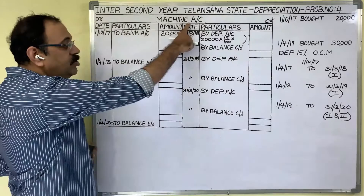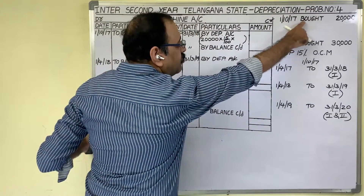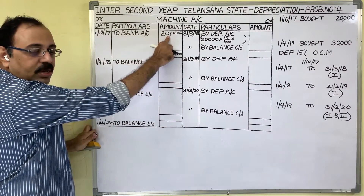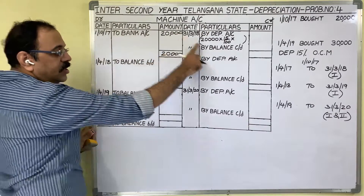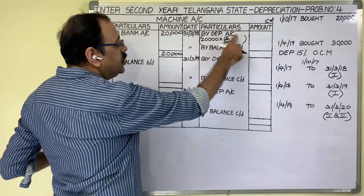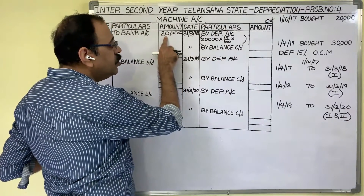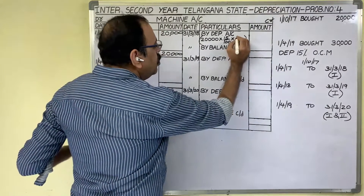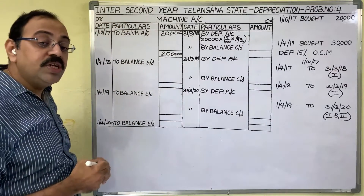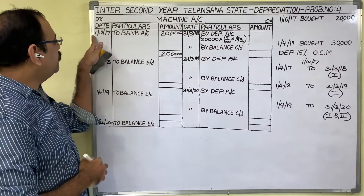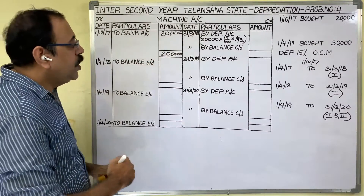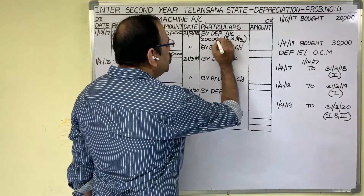In the machinery account, they purchased this asset for 20,000 — debit side, to bank. Now the 1st year last day is 31st March 2018. On that day we have to provide depreciation for 6 months: 20,000 × 15% × 6/12. This 6 months is counted from 1st October 2017 to 31st March 2018. We cancel the numerator and denominator.